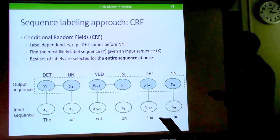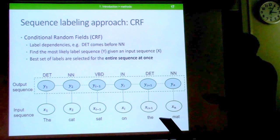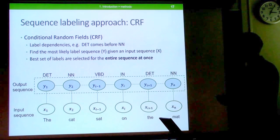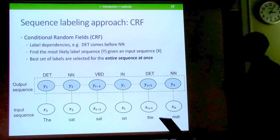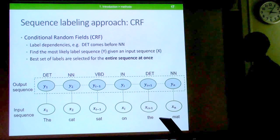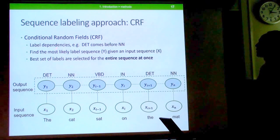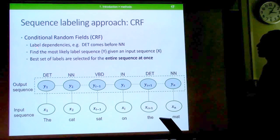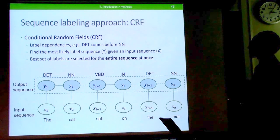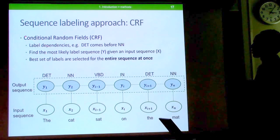The second approach is sequence labeling based on Conditional Random Fields. Unlike SVMs, CRFs consider contextual information, which is necessary for POS tagging and morphological segmentation. For example, in English, determiners usually come before nouns — this context helps identify correct labels. CRFs find the most likely label sequence given an input sequence X, considering entire sequence transitions.